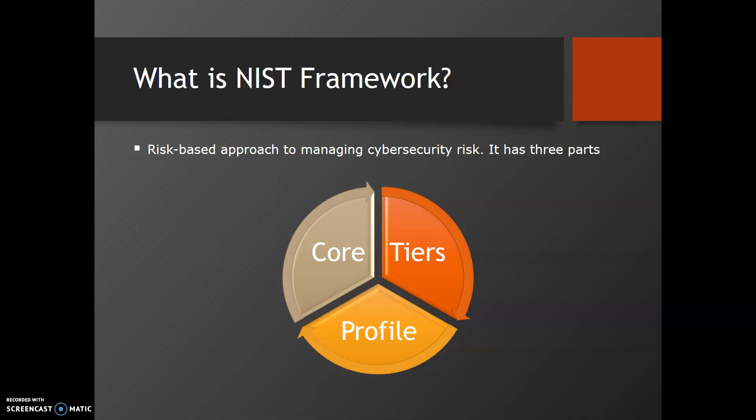The next part is Implementation Tiers. Implementation Tiers provide context on how an organization views cybersecurity risk and the processes in place to manage that risk. The framework tiers describe the degree to which an organization's cybersecurity risk management practices exhibit the characteristics defined in the framework.